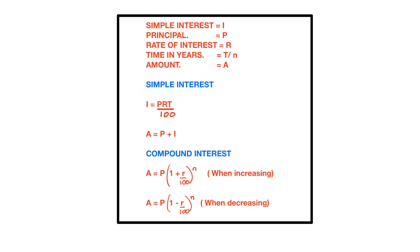To find simple interest we use: I = PRT over 100, where P is the principal, R the rate of interest, and T the time in years. If you want to find R, T, or P when interest is given, you need to make that variable the subject. For example, to find R: R = I × 100 divided by principal × time.